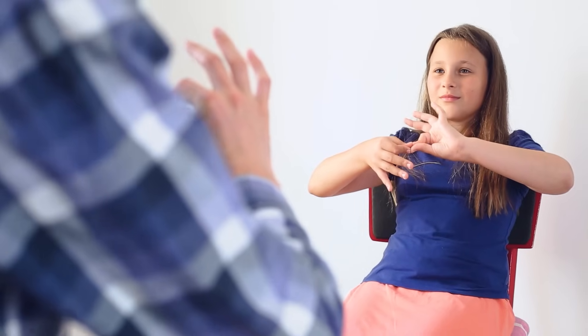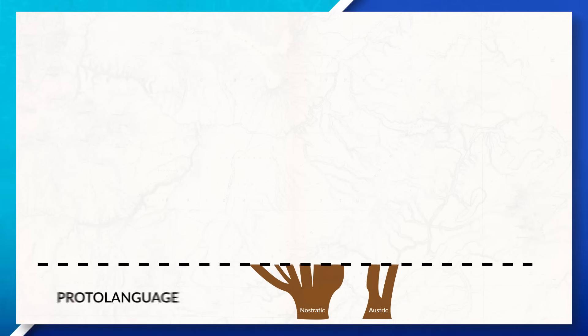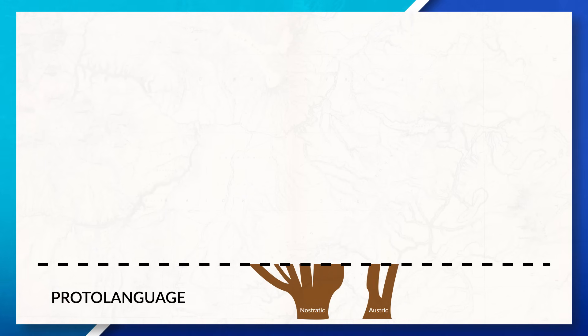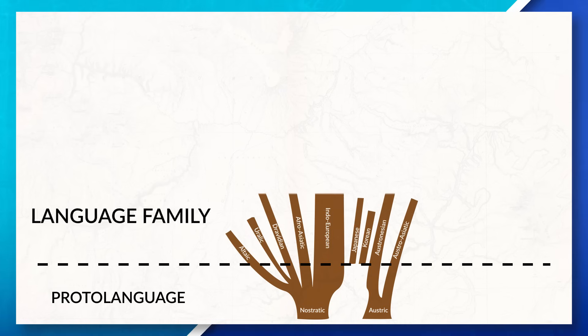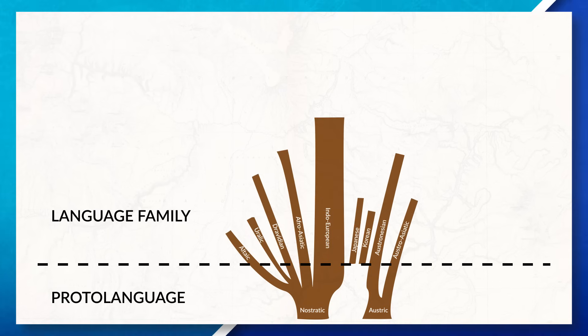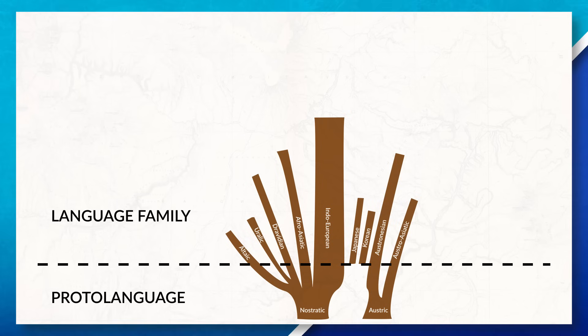Starting out with languages, we can go back in time and trace a language back to its origin. When we go back to the starting point of a language, we are looking at a proto-language. Often times this means we're looking back in time before written records. From there we can move up to a language family, which consists of a variety of different languages that have a common ancestry. Think of it as if the languages are genetically related.